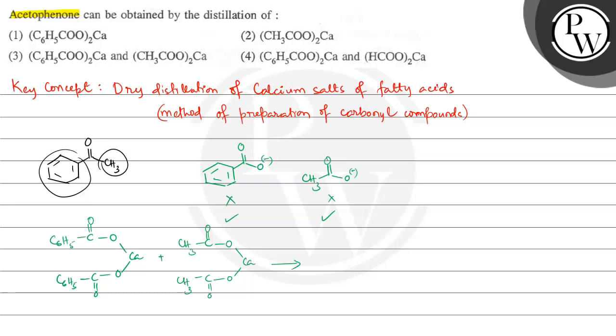So this will release two moles of calcium carbonate, minus 2 CaCO3, and we will get two moles of acetophenone: CH3 C double bond O and here we have C6H5.